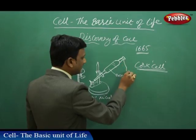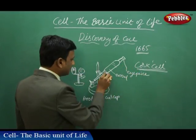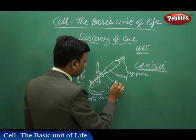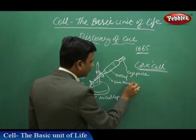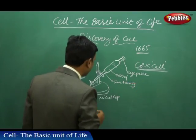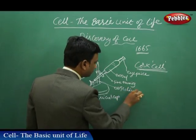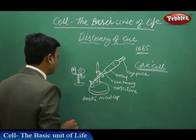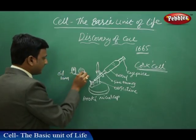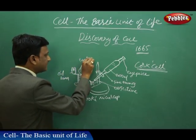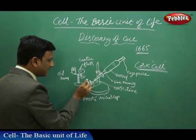Let us see the different parts of Hooke's microscope. This is the barrel, this is the eyepiece, and this is the fine tuning screw. This is the objective. Here is the light source — an oil lamp to produce light — and here is the water flask to focus the light.